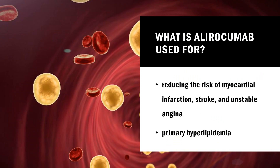What is alirocumab used for? Alirocumab is a PCSK9 inhibitor indicated for: (1) reducing the risk of myocardial infarction, stroke, and unstable angina requiring hospitalization in adults with established cardiovascular disease; and (2) use as an adjunct to diet.